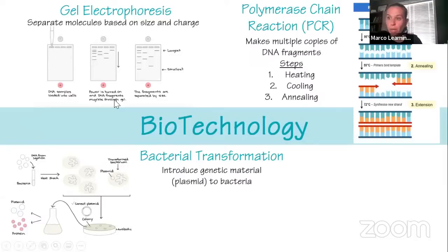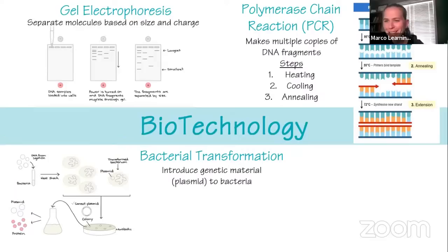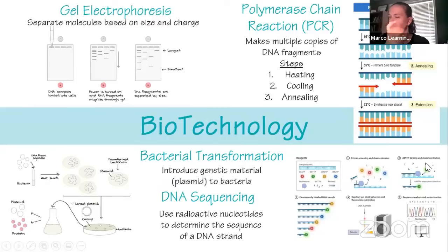Bacterial transformation: you modify a plasmid of interest, heat shock the bacteria to allow insertion of that plasmid, then grow them on a plate. This is how you can make antibiotic-resistant bacteria or bacteria that glow green. DNA sequencing uses radioactive isotopes to determine the nucleotide sequence of a DNA strand — the output graph lets you determine each nucleotide position.